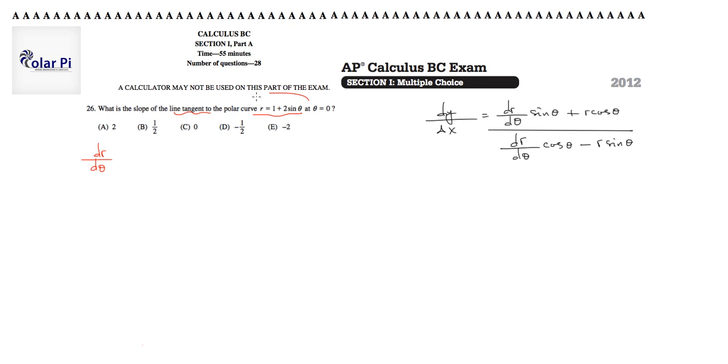Since we're given that r equals 1 plus 2 sine theta, dr/d theta should equal 2 cosine theta. Got it.